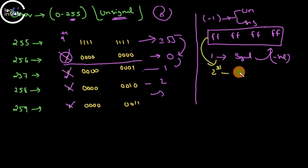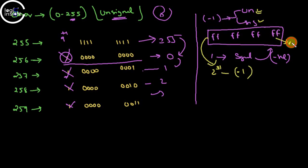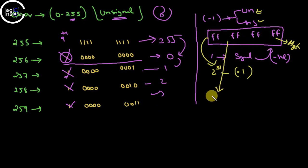Two's complement of all ones gives the answer as -1 in the signed system. In the unsigned system, all ones are treated as a magnitude with no sign conversion, so we get the answer as 4,294,967,295. Even though we stored -1, we got this large value due to how unsigned retrieval works.